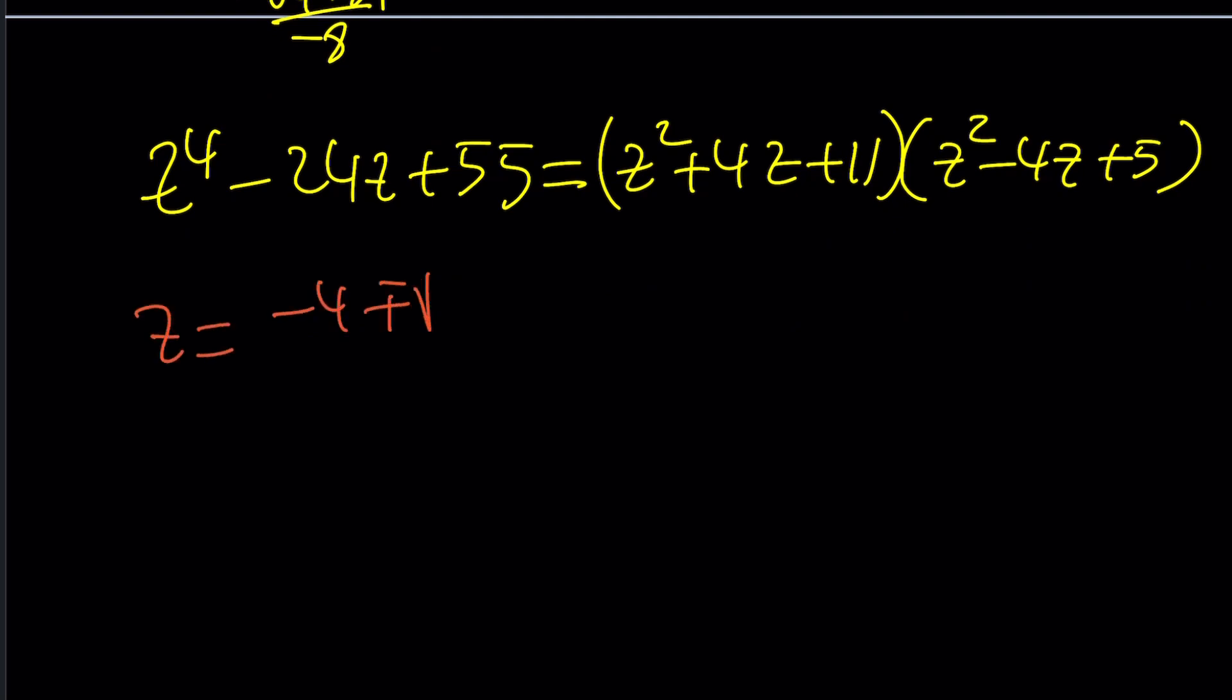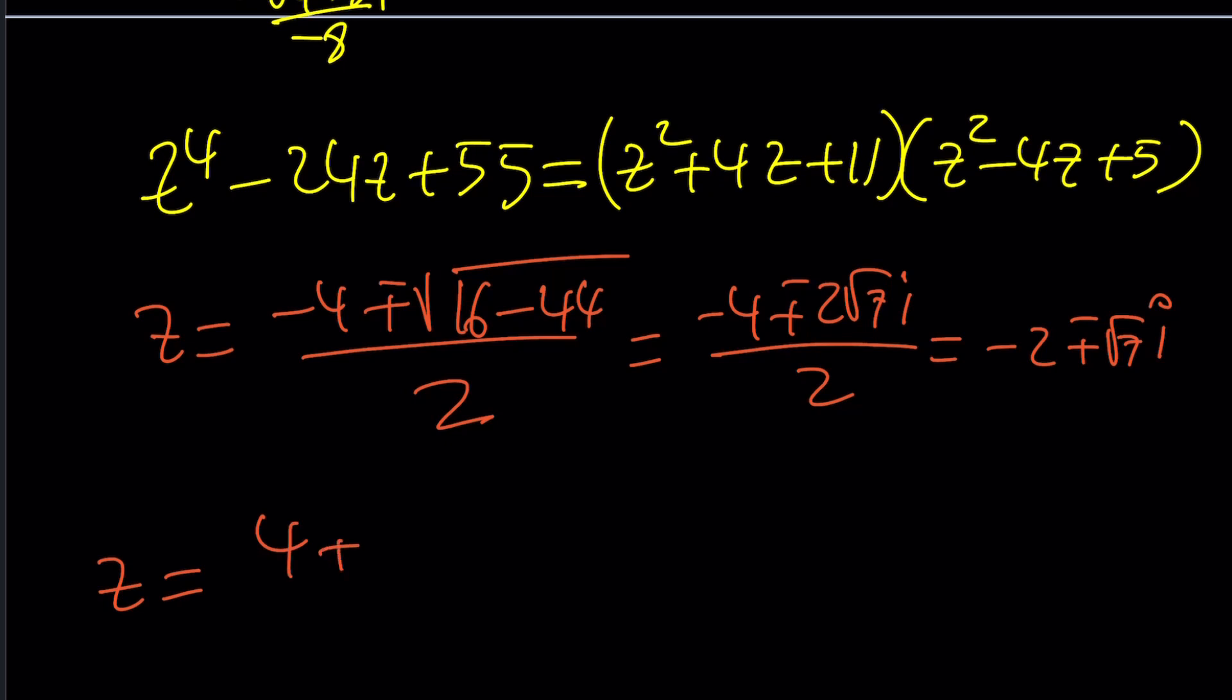If you solve the first one, negative b plus minus the square root of b squared, which is 16, minus 4ac, which is 44, divided by 2. And from here, we're going to get the square root of negative 28, which is 2 root 7 plus minus 2 root 7i divided by 2. And that's going to be negative 2 plus minus root 7i. And then the second equation gives us 4 plus minus the square root of 16 minus 20. And that's negative 4. Its square root is 2i. 4 plus minus 2i divided by 2. And that's going to be 2 plus minus i. So, those are going to be the solutions.